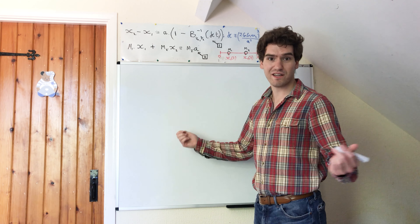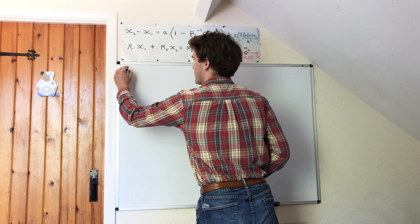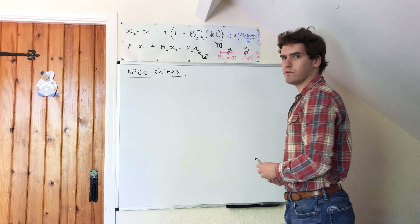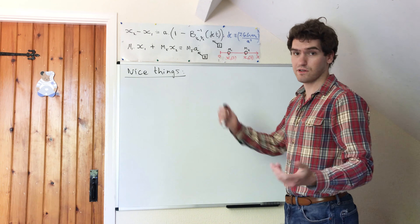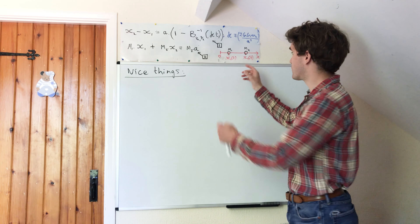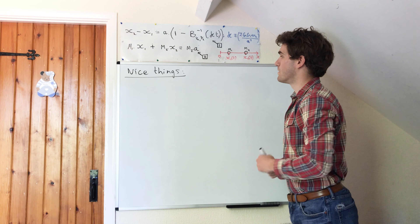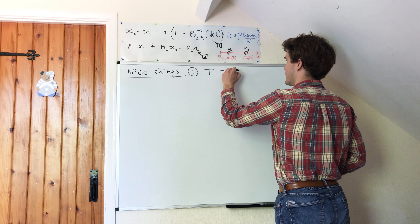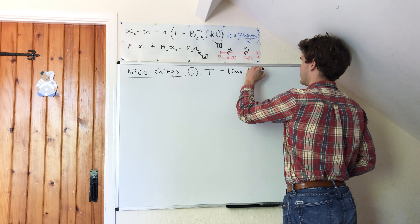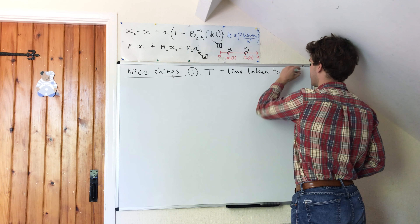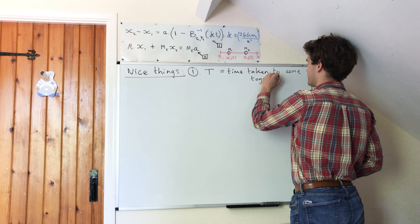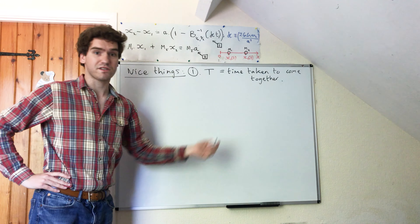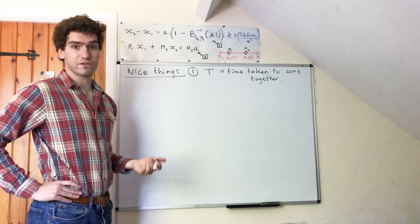So let's start off with the nice things. One useful thing you might want to find from this is the time that it takes for the masses to come together. So the first thing is going to be big T, which is the time taken to come together. We hope that this time is finite and we can use our equations that we've derived to find out what this is.